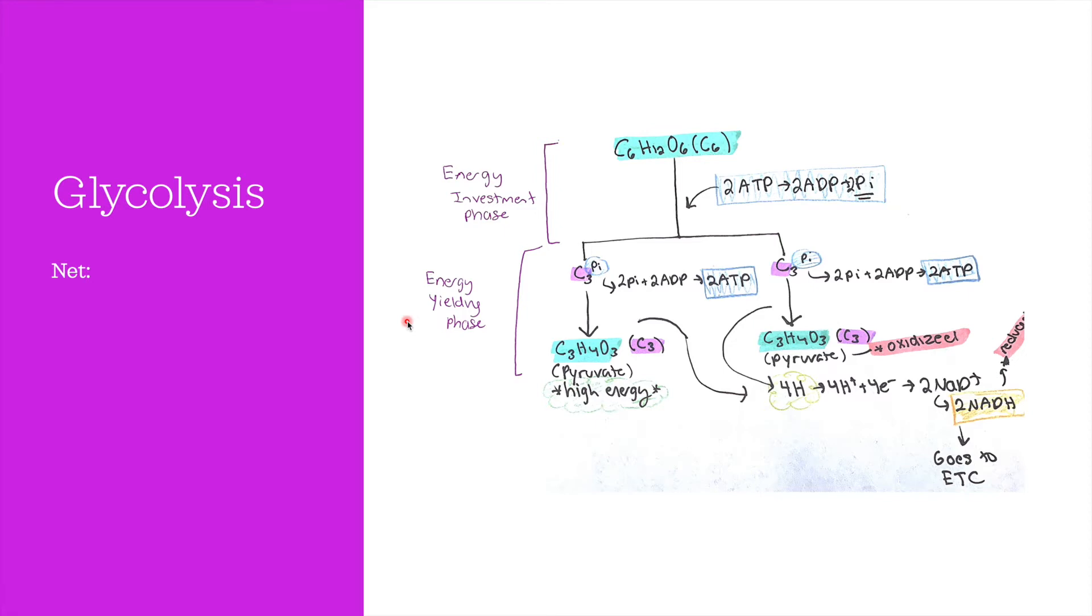The process starts with glucose, a C6 compound, meaning that it has six carbons. Two ATP molecules are invested here and the glucose is broken into two C3 compounds. Both compounds are then phosphorylated with the two inorganic phosphates from the initial investment of ATP.